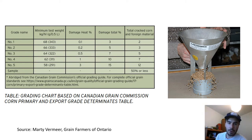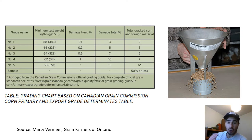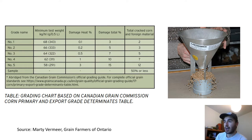Test weight is a very important grain quality parameter for corn. Test weight in part determines the grade of a corn crop, and if certain minimum test weights are not achieved, the farmer can be docked a penalty when they're marketing or selling their corn.